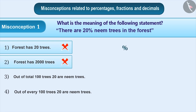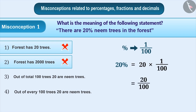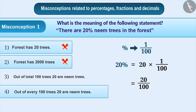Since the meaning of percent sign is 1 by 100, therefore 20% is equal to 20 into 1 by 100, which is equal to 20 by 100. That means, in the forest, out of the total number of trees, 20 by 100 part is of neem trees. That means, out of every 100 trees, 20 are neem trees. With this understanding, the correct answer is given as option 4.